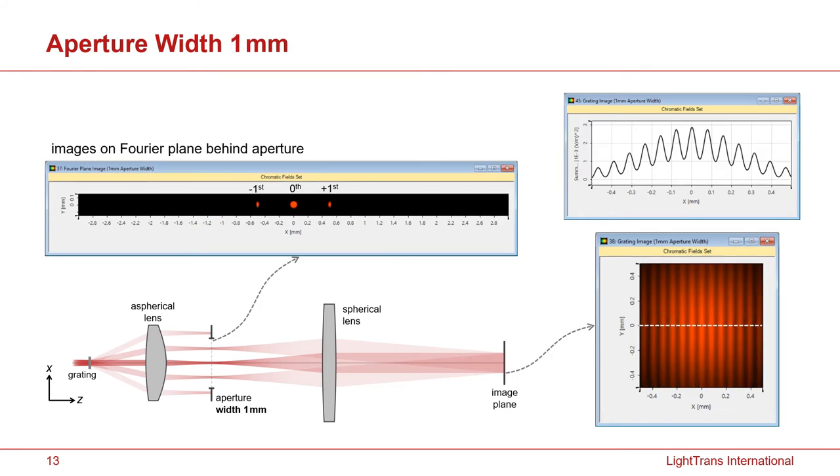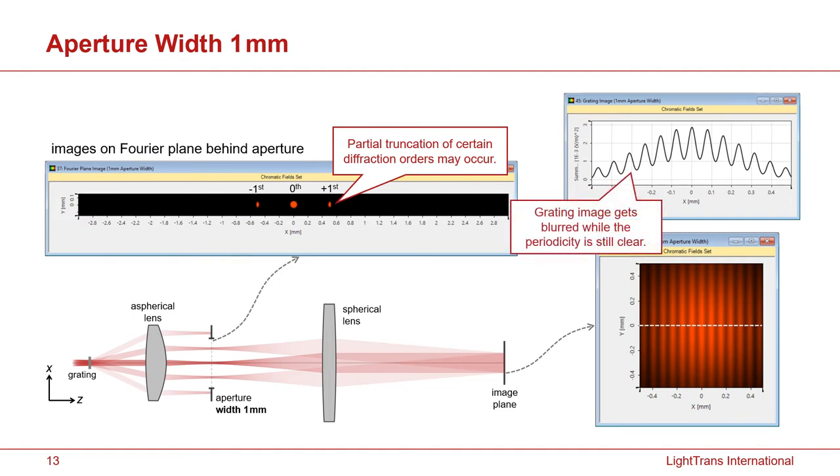If I reduce the aperture even more, now it has a width of only 1mm. It is now even truncating partly the minus and plus first order. And in this case, if you look at the image, it is much more blurred. You can see it very easily. All these pictures are generated in VirtualLab.